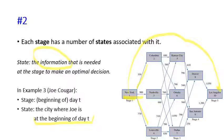State is very important — it is the information that is needed at the stage to make an optimal decision. Without the information about the state, we cannot make any decision or a reasonable decision.